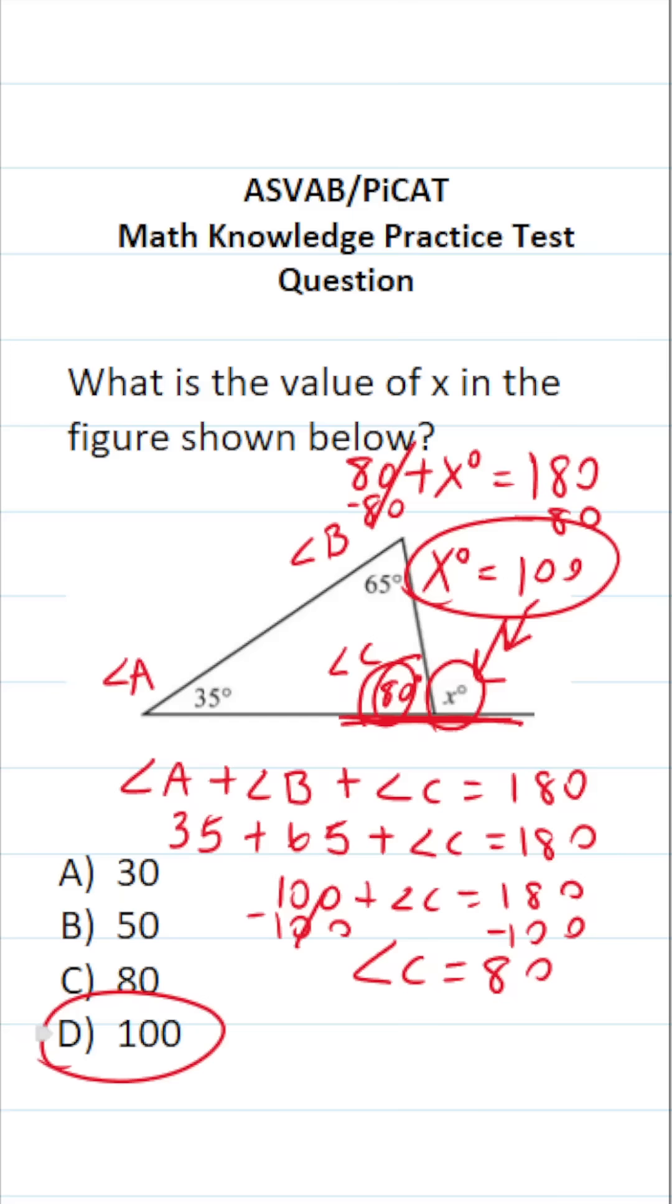Again, in order to answer this one, you had to know that the triangle sum theorem says that the three angles in a triangle add up to 180 degrees. Likewise, you also had to know that supplementary angles add up to 180 degrees. So again, this one is D.